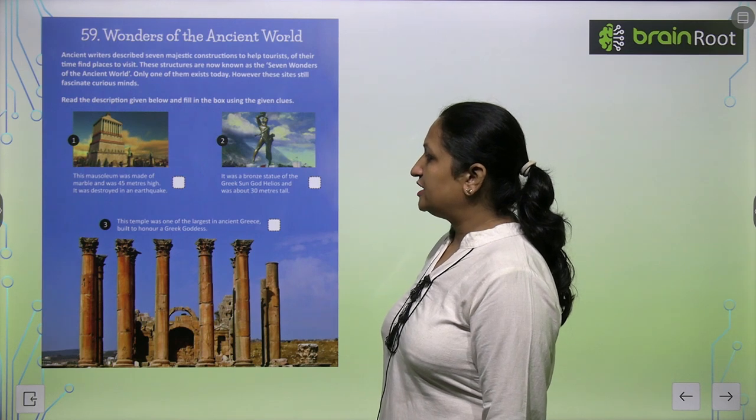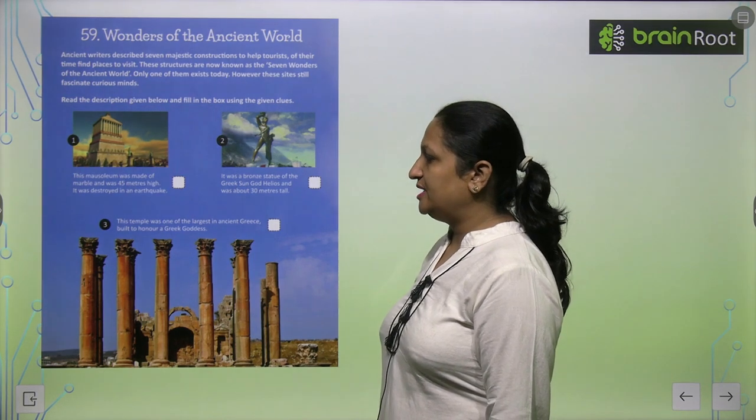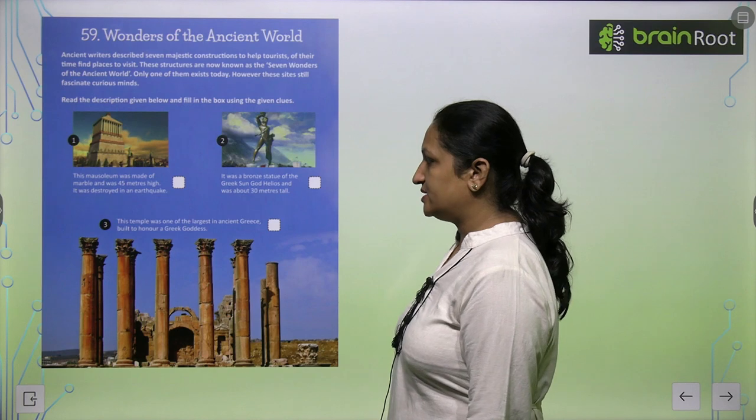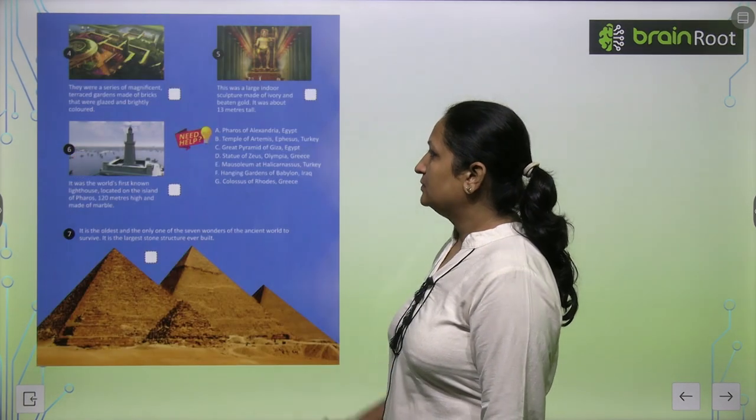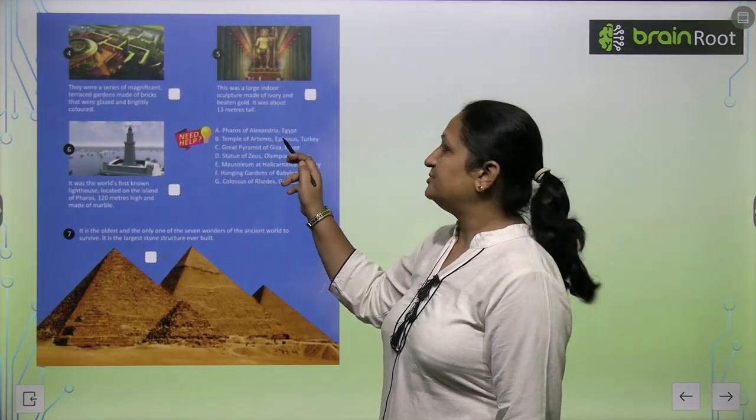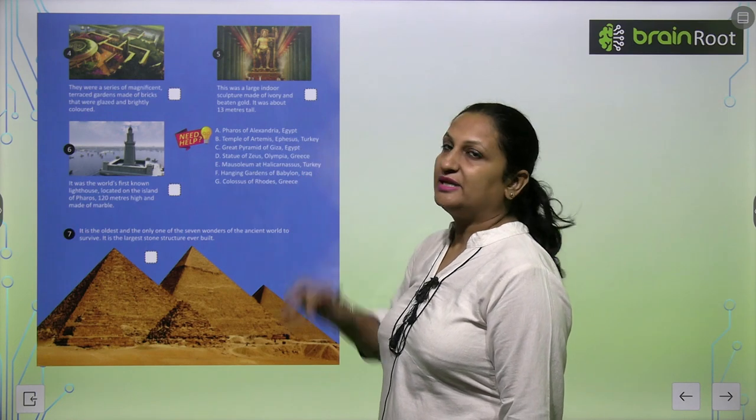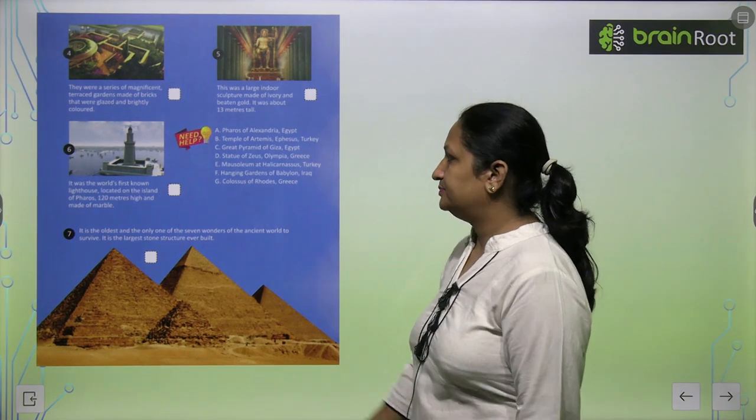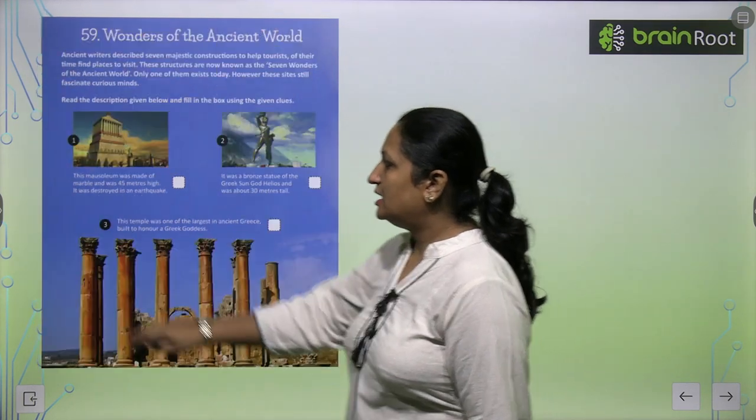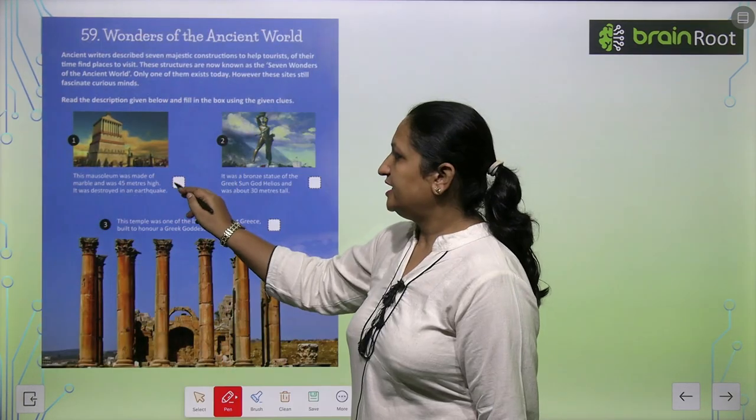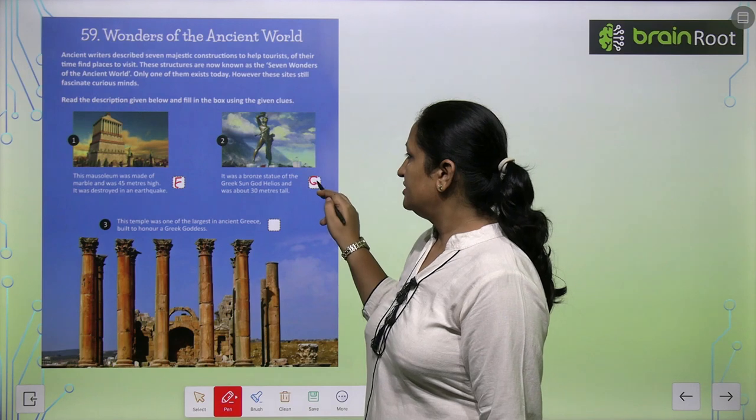This temple was one of the largest in ancient Greece, built to honor a Greek goddess. This is the Temple of Artemis, Ephesus, Turkey. You can write here B. So here we can write E, G, B.